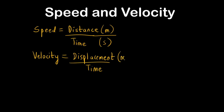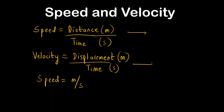The unit of speed and velocity is meter per second, or any unit of distance divided by unit of time. The difference between them is that speed is a scalar quantity — it does not depend on direction — whereas velocity is a vector quantity that depends on both magnitude and direction.